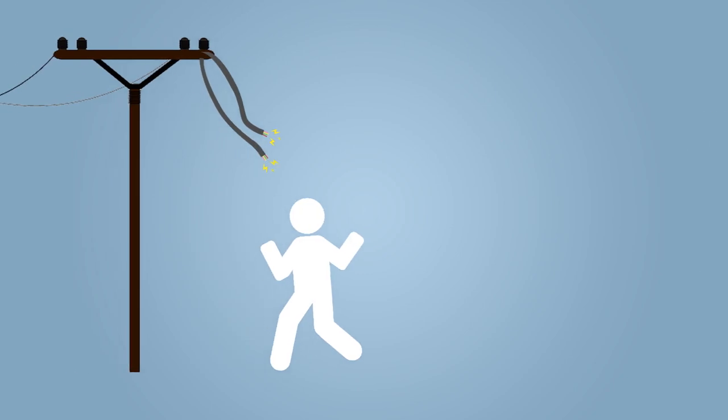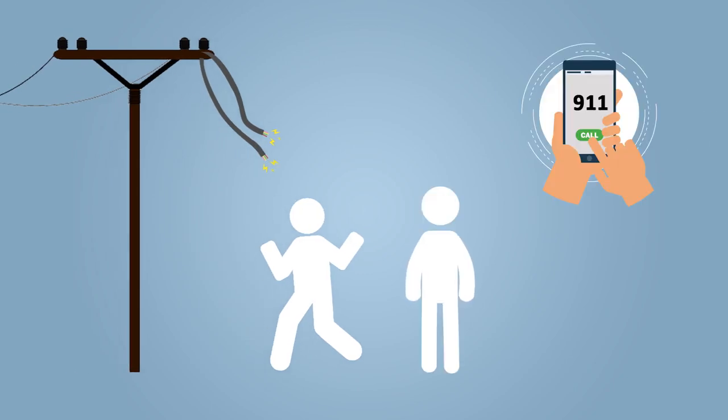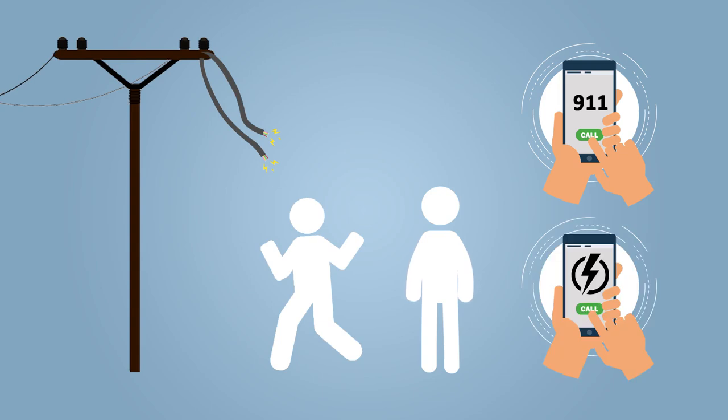If the person has come into contact with high voltage outdoor wires, you should call 911 first, followed by the power company as soon as possible. Do not attempt to touch the person or free them from wires.